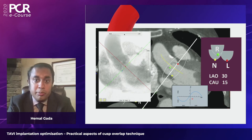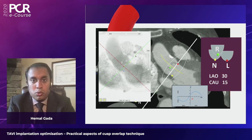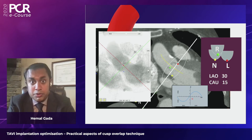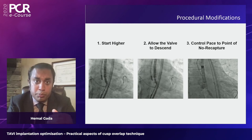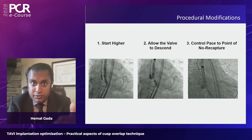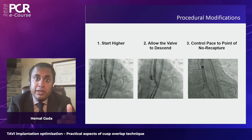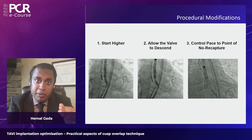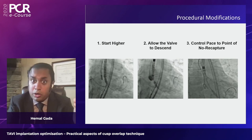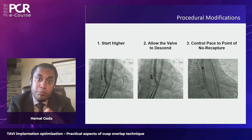The fluoroscopic plane rotation around the left cusp causes the non-cusp to drop and the right cusp to raise, opening parallax in the native annulus. Imaging is critical. For procedural modifications: step one is to start higher. There is a centimeter gap between the nose cone and the base of the valve housed in the Evolute capsule. There is no need to bring the marker band all the way down into the annular plane, as the nose cone material can prop back the non-coronary cusp.